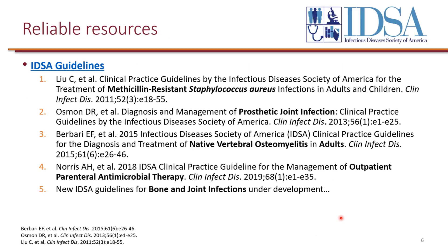IDSA has several guidelines that are useful for osteomyelitis. The 2011 MRSA guidelines has a section dedicated to bone and joint infection specifically due to MRSA. There is also a 2013 IDSA prosthetic joint infection guideline, as well as a 2015 IDSA guideline for native vertebral osteomyelitis — native meaning the vertebrae are the natural bones with no prosthetic devices involved. Additionally, because osteomyelitis often involves long-term antibiotics, there are 2018 IDSA recommendation guidelines for outpatient parenteral antimicrobial therapy, or OPAT. A new IDSA guideline for bone and joint infections is also under development.